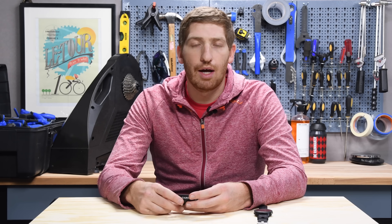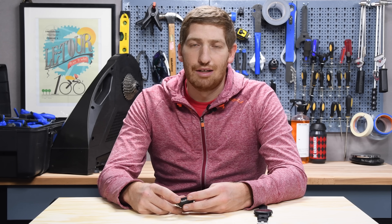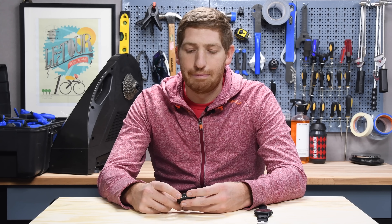If I'm climbing somewhere — like in the Alps — I go to a screen with vertical speed, grade, distance, and speed. Generally speaking, these are a bit of a Debbie Downer screen to look at — it's basically just pain.